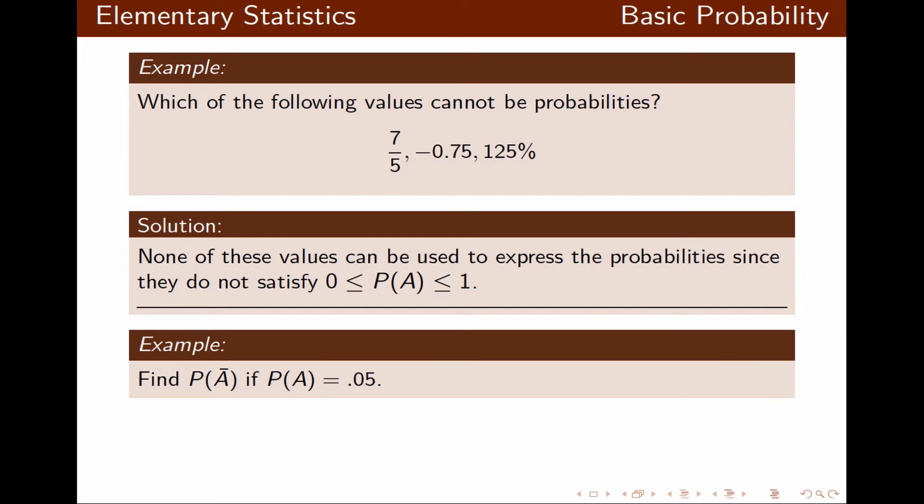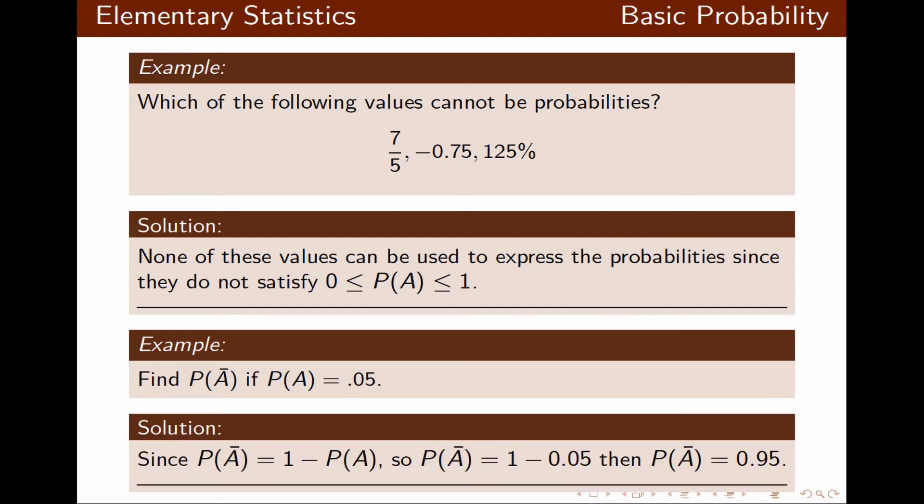Now if the probability of A is given to be 0.05, what is the probability of not A? We're going to use the complement rule, so the probability of not A will be 1 minus the probability of A, which in this case equals 0.95.